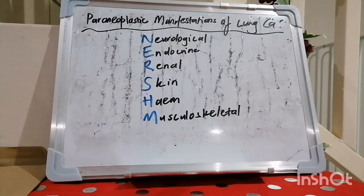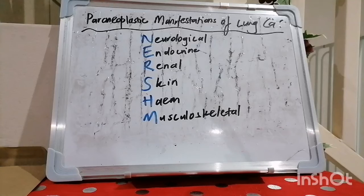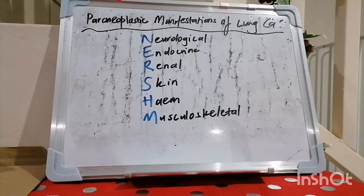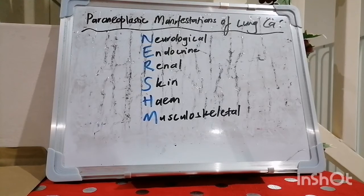There are a lot of paraneoplastic manifestations in lung cancer. N stands for neurological — it's mainly small cell lung cancer that causes this. Examples of neurological manifestations include dementia, cerebellar degeneration, optic neuritis and retinopathy, limbic encephalopathy, paraneoplastic sensory neuropathy associated with the infamous anti-HU antibodies, and of course, Lambert-Eaton Myasthenic Syndrome.